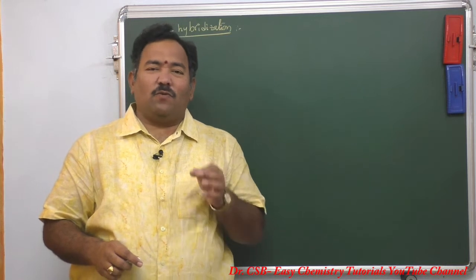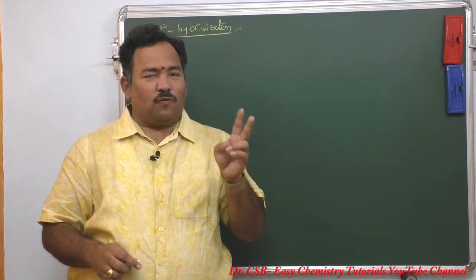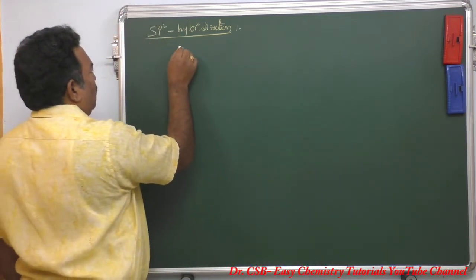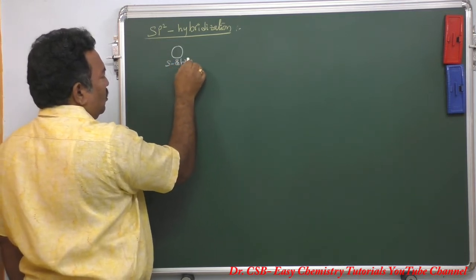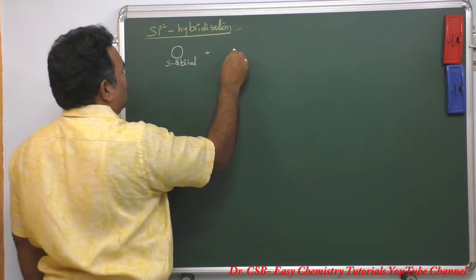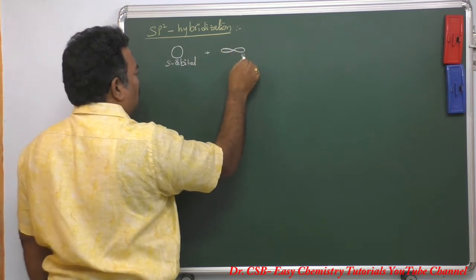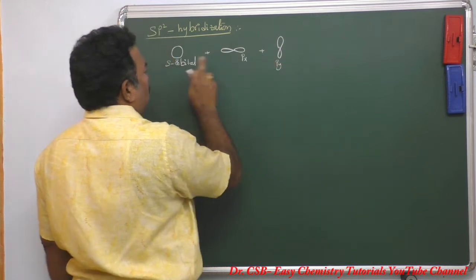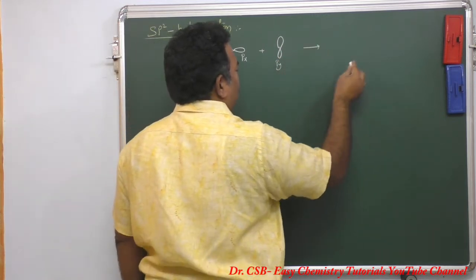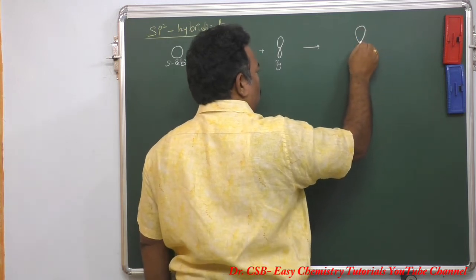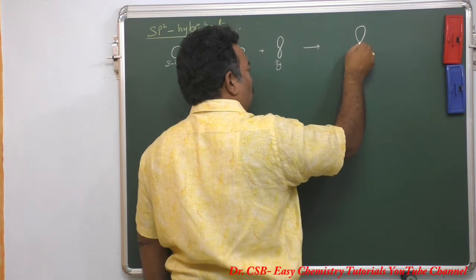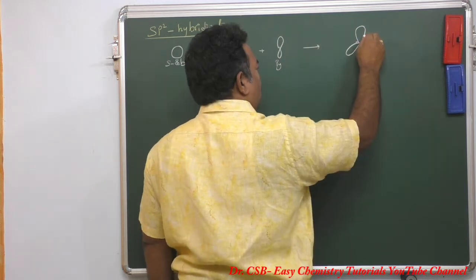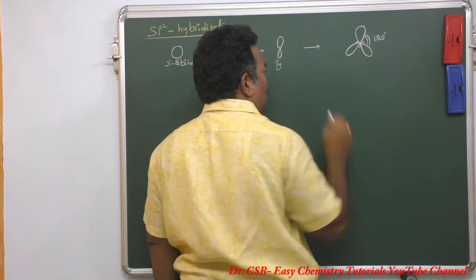In sp2 hybridization, one s orbital mixes with two p orbitals to form three hybrid orbitals. It mixes with two p orbitals — px and py. These three will intermix and form a trigonal shape, and the bond angle is 120 degrees.